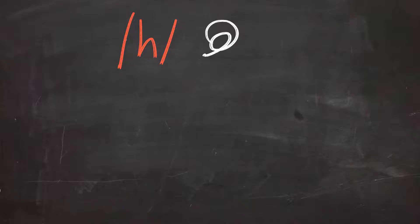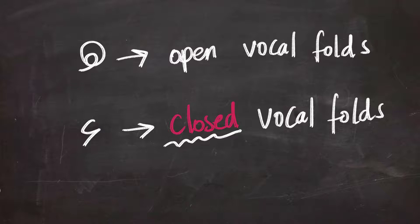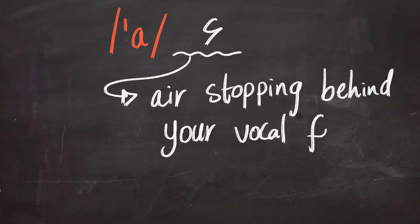As we've pointed out, the H is produced by letting the gush of air through the open vocal folds. The Hamza on the other side is produced by closing your vocal folds. So in a sense, it's the opposite action of the H sound. The sound is produced by the formed air behind your vocal folds.